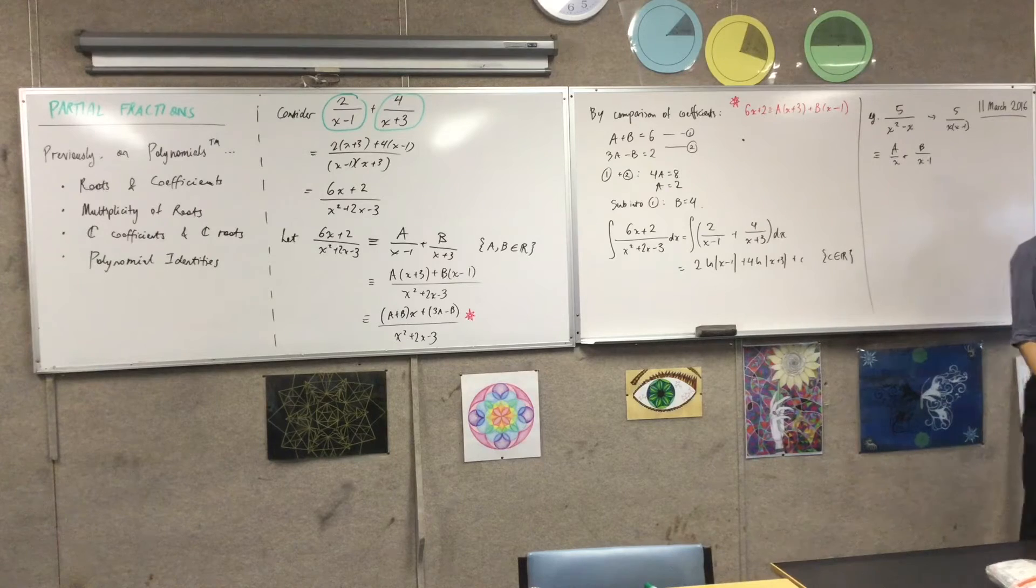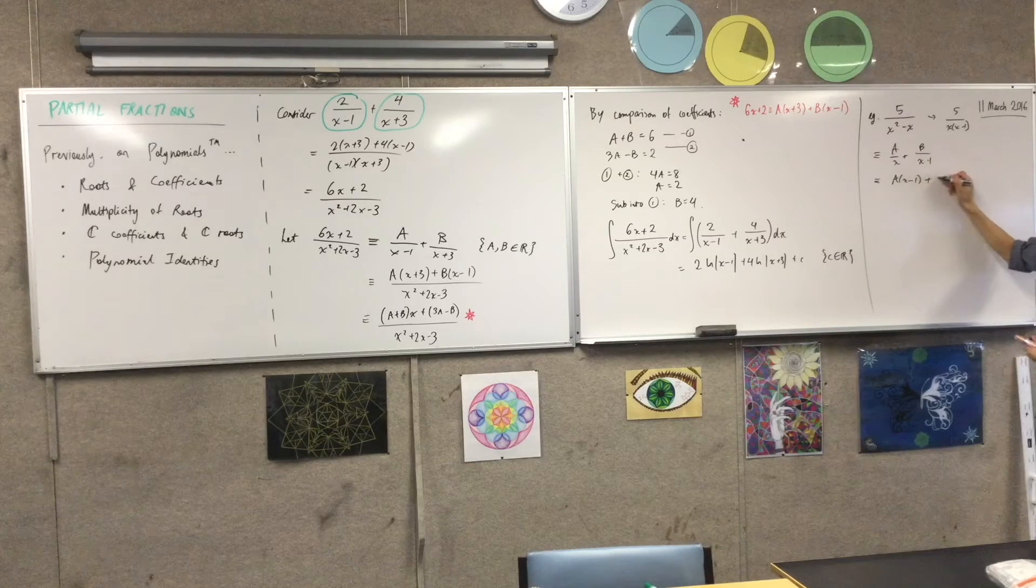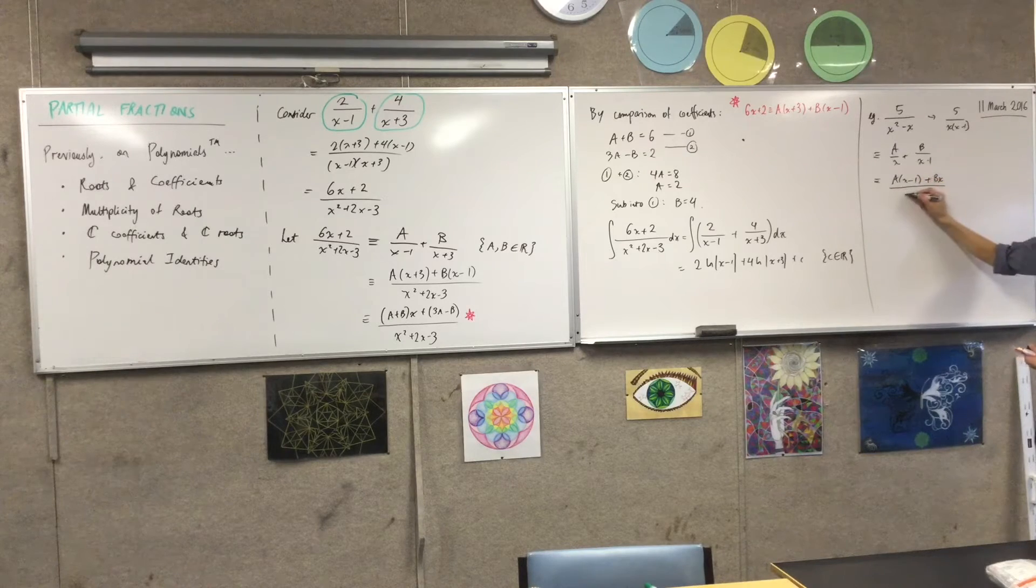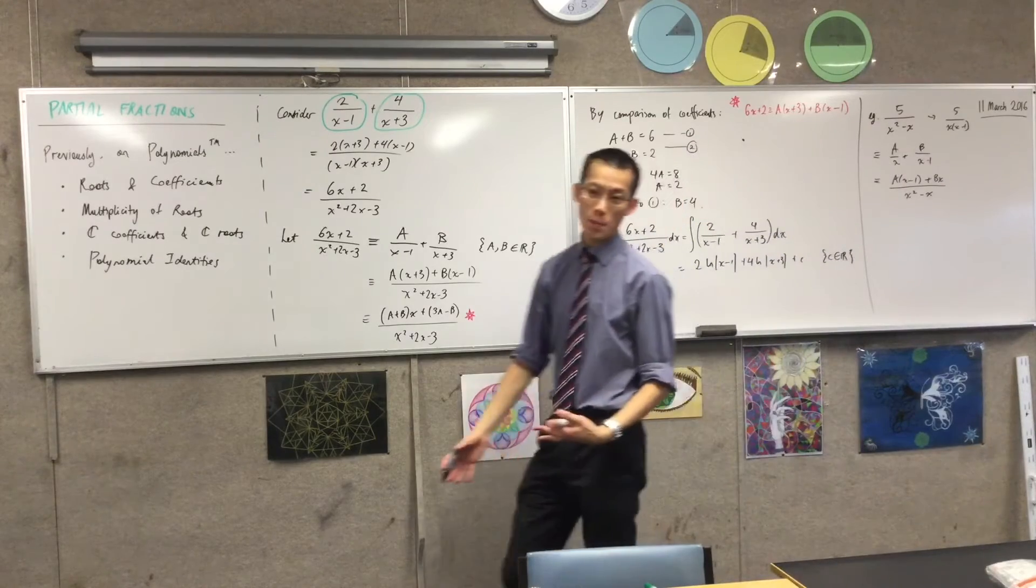Okay, now, when you go ahead and you put those together into one fraction, you're getting this. And I'm just going to put that back into its unfactorized form. And then, of course, you do the same comparison of coefficients.